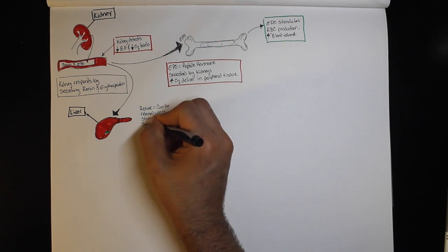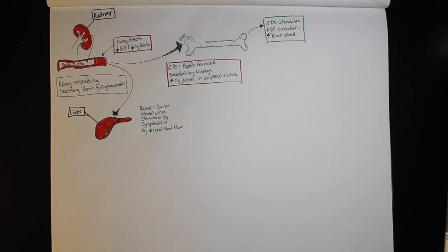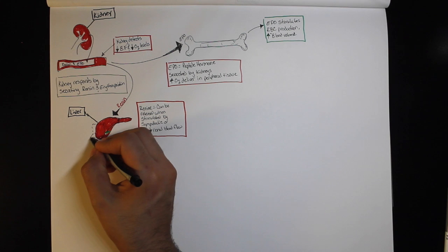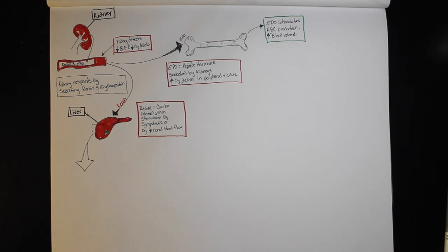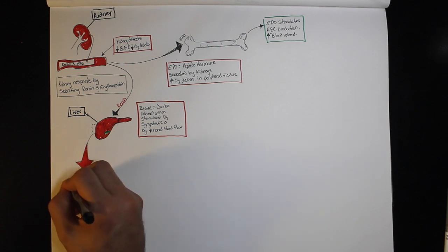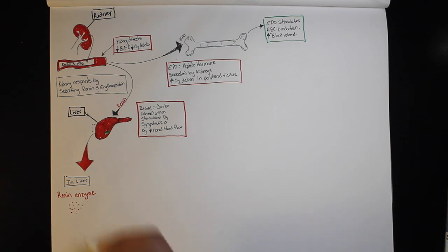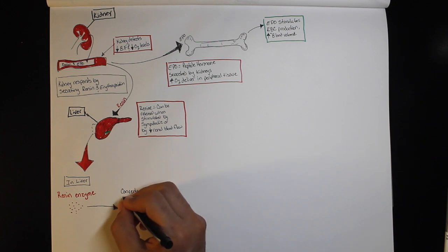The liver normally produces a plasma protein called angiotensinogen. Angiotensinogen is a precursor to angiotensin 1, meaning before you can have angiotensin 1, something must convert angiotensinogen into it. Angiotensinogen is catalytically cleaved by renin to produce angiotensin 1.